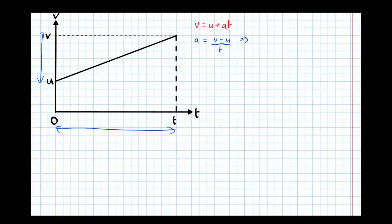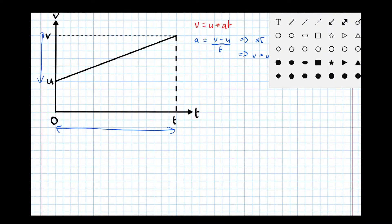So now multiplying both sides by T, we get A T equals V minus U. If we do a bit more rearranging, take the U over the other side, we get V equals U plus A T, which is what we wanted. So that's the first one derived, let's put a box around it.